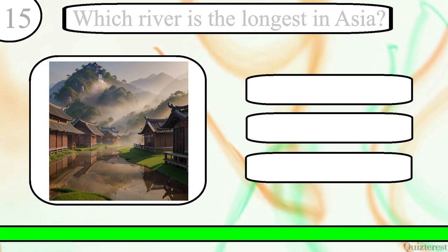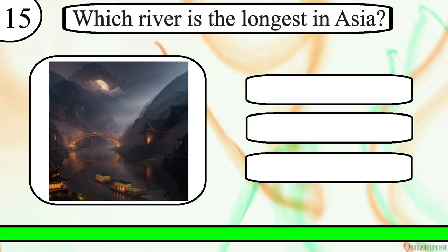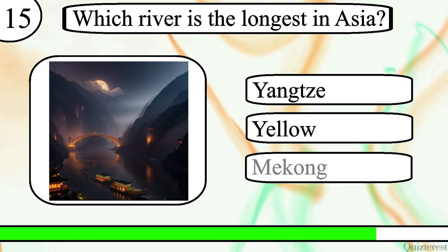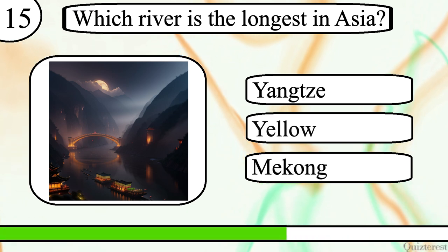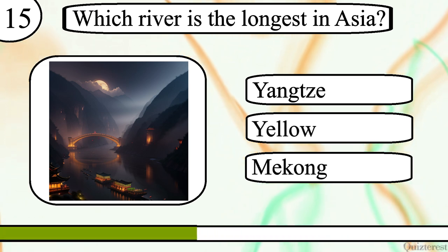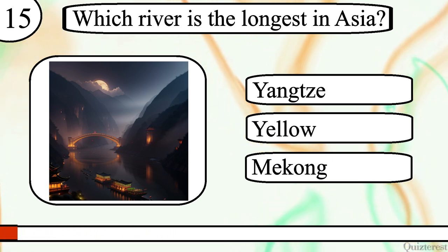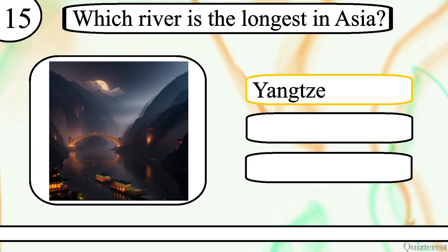Question 15. Which river is the longest in Asia? Yangtze, Yellow or Mekong? The correct answer is Yangtze.